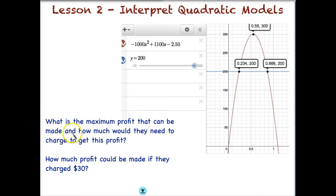Let's look at some additional information here. It says, what is the maximum profit that can be made, and how much would they need to charge to get this profit? So by now, you remember that this is our maximum. And if we want to look for the maximum profit, the maximum profit is going to be this 300 right here. And what would we need to charge? 55 cents, right? We would need to charge 55 cents in order to have a maximum profit of 300. But according to this model, we cannot have a profit of more than 300.